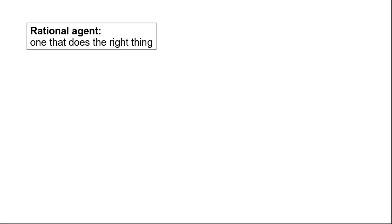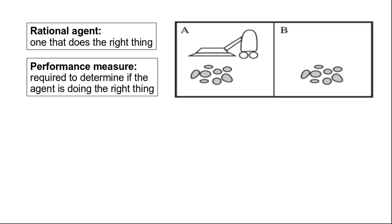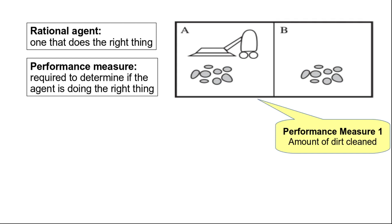A rational agent is an agent that does the right thing. But how do we know whether an agent is doing the right thing or not? To determine that we need something called a performance measure. If we go back to our example from the last class, the vacuum cleaner agent, a possible performance measure would be the amount of dirt that is cleaned by the agent.